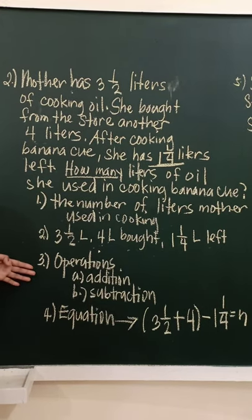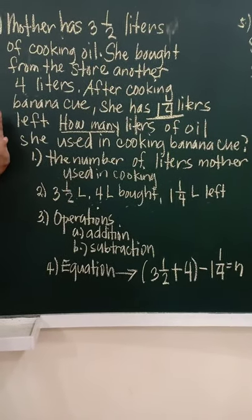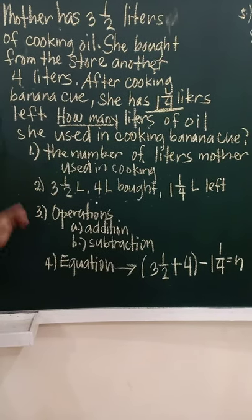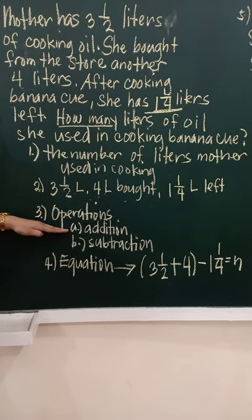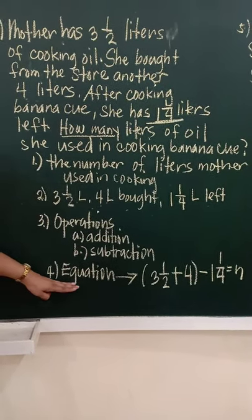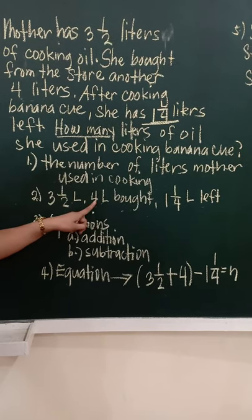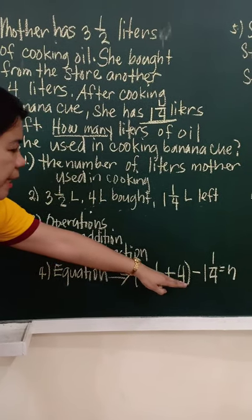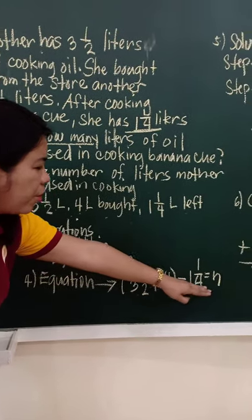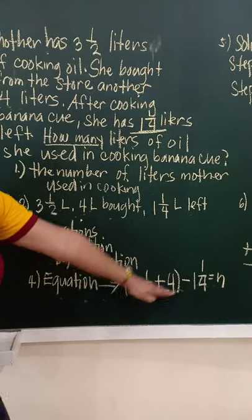The operations: what operations will we use? Children, this is an example of a multi-step problem. Multi-step means you need two operations. So, we'll use two, addition and subtraction. For the equation, we'll get it from the given. Three and one-half, add it to four liters. Then, after you add, minus one and one-fourth equals N. This equation will guide us in solving. Since two operations are involved, we'll do two steps to solve the problem.